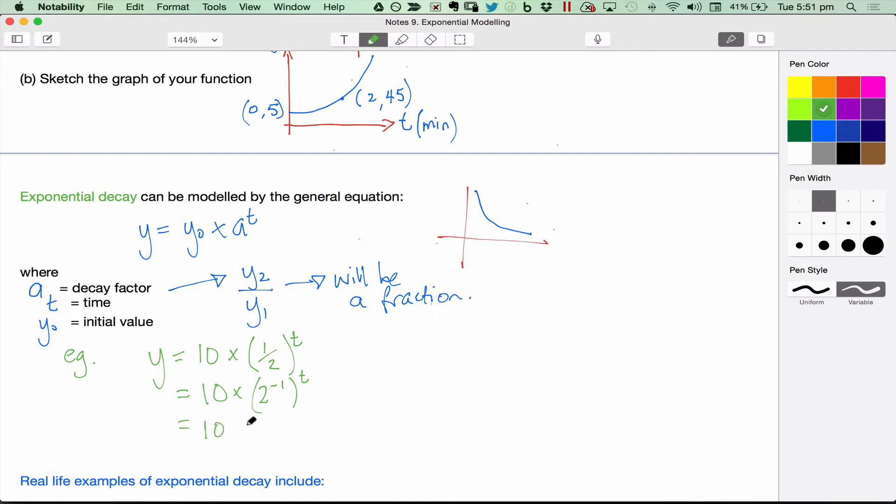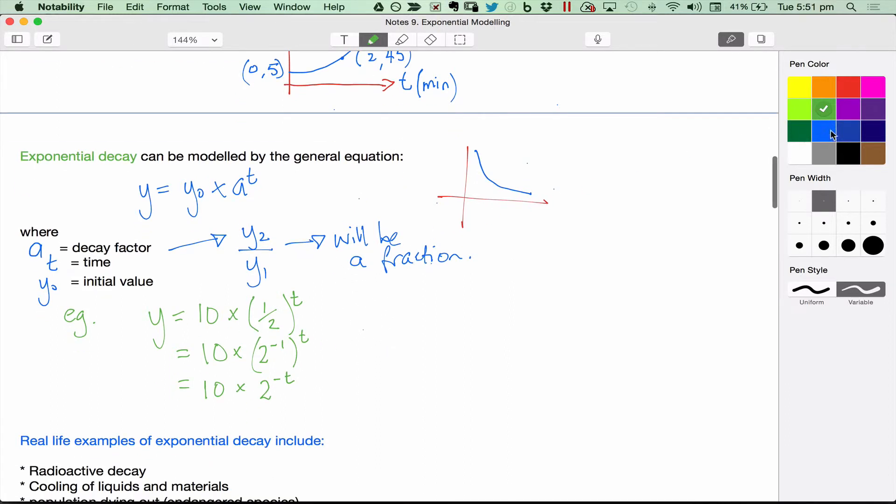And I can end up with 2 to the negative t. So I want you to also be aware that you can have an equation that has a negative t up there, like this one, and a whole number. So if you use this with the positive t power, you'll have a decay factor, which is a fraction. If you rewrite it, and you don't need to, but I'm just letting you know in case you get a question that has a negative in it, and it's not a fraction, and you think, oh, this can't possibly be decay. If you've got a negative power, it's going to be a decay. So two different ways of writing that.